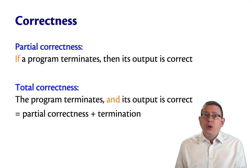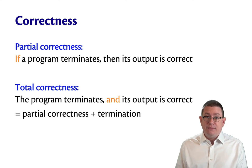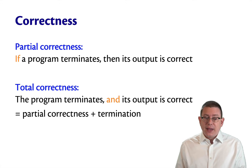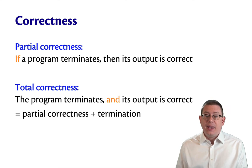There's also a notion of total correctness. Total correctness means that the program does terminate, definitely, and its output is correct. So total correctness is actually partial correctness plus termination. The program definitely terminates and it's correct.